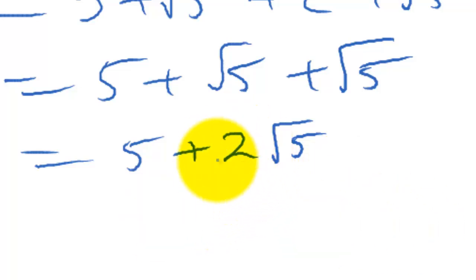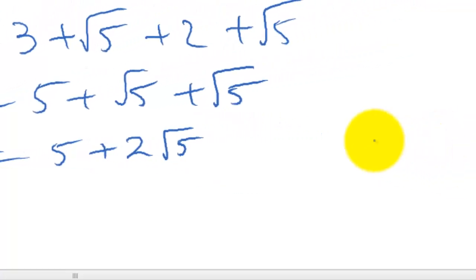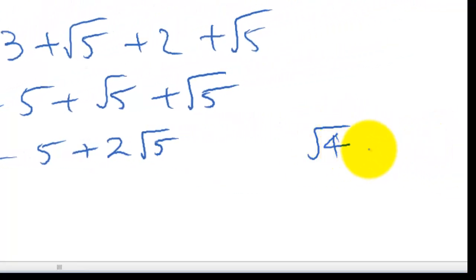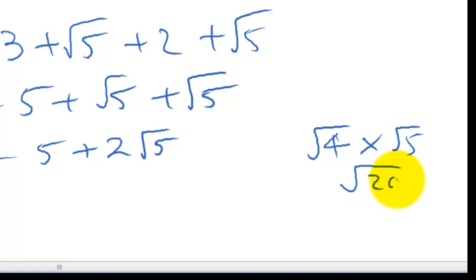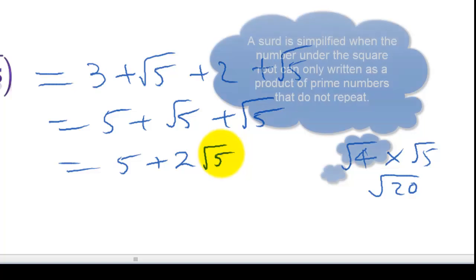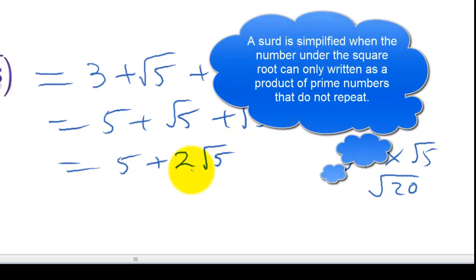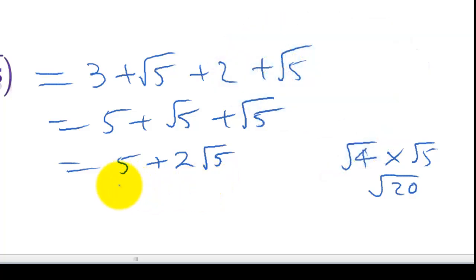If we were to try and write this as one square root, we could write 2 as the square root of 4, so 2 root 5 becomes the square root of 4 times the square root of 5, which is the square root of 20. But this doesn't make anything simpler. Once you get down to a number which can only be given as a product of individual prime numbers with no squares, we can't simplify any further.